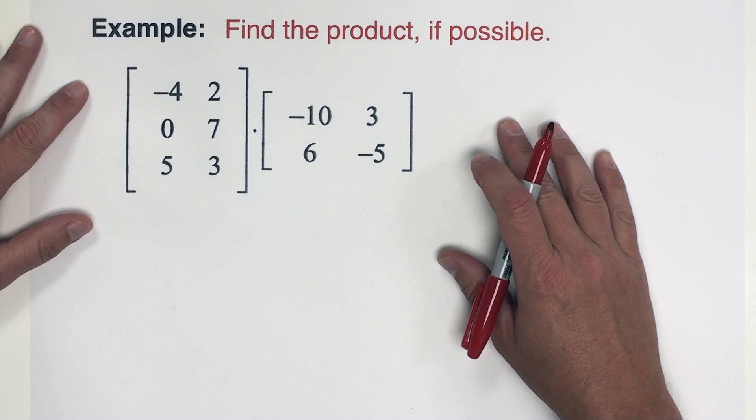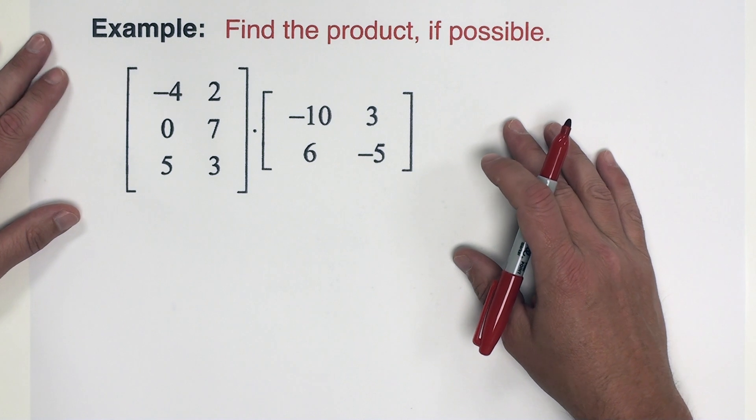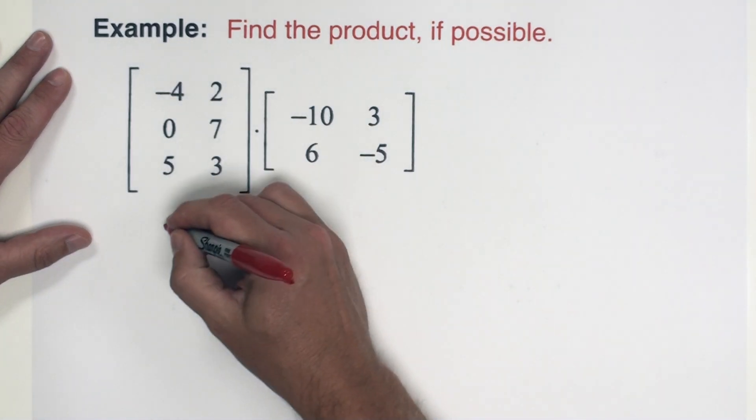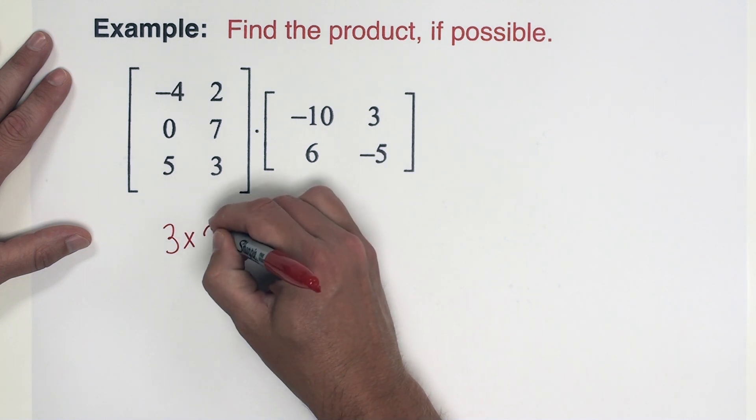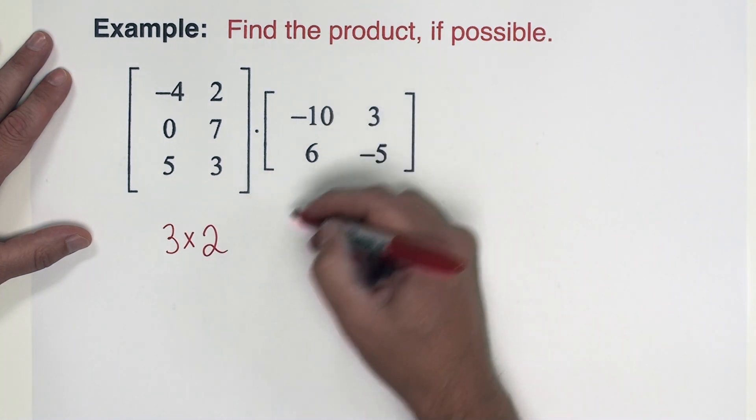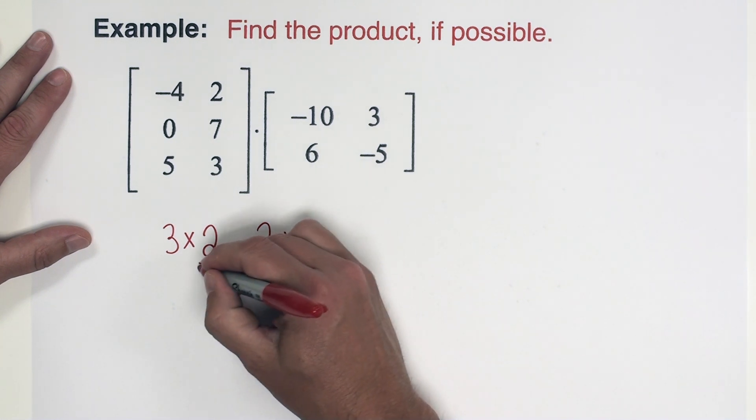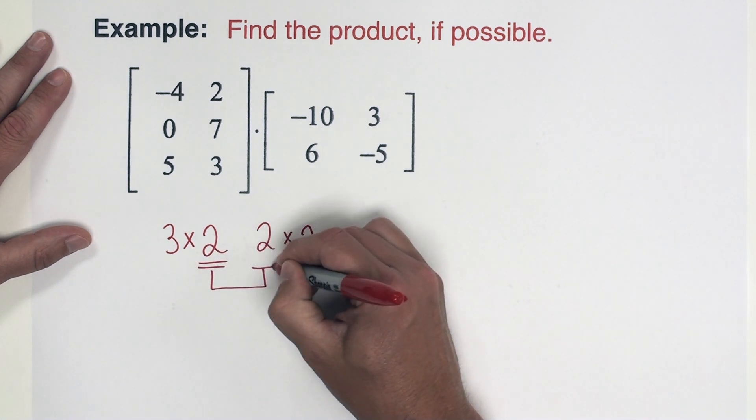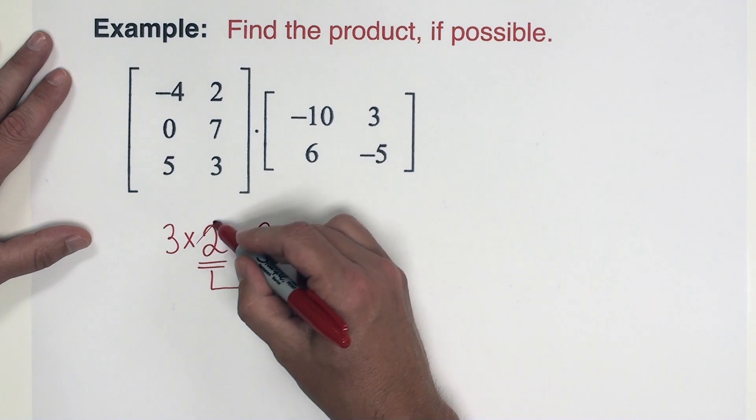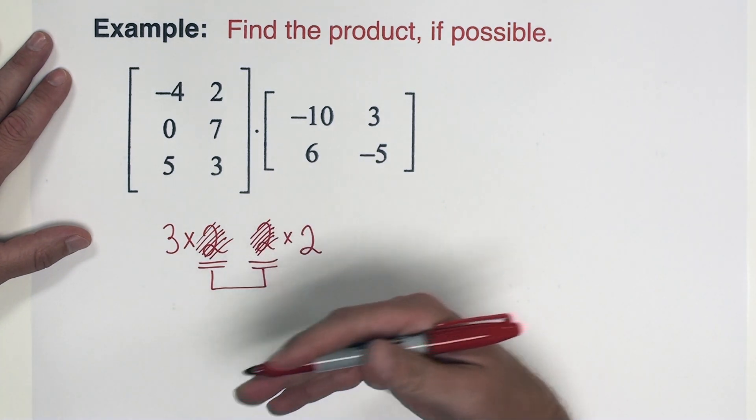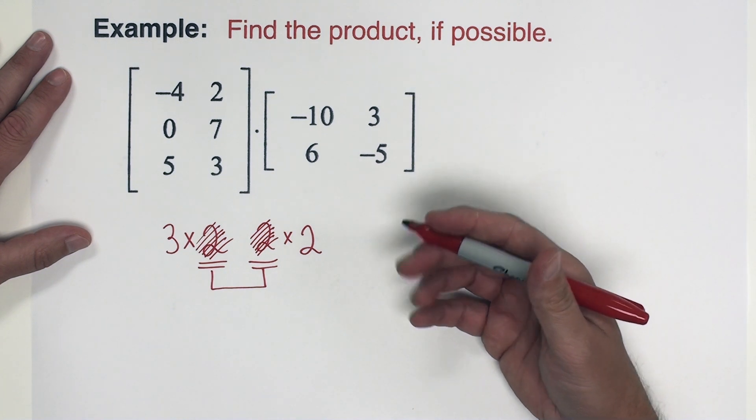First thing we're going to do with the matrix product is we're going to check the size of the matrices. So this first matrix has three rows and two columns. This matrix has two rows and two columns. So I'm checking right here on the inner dimensions. Those numbers are the same, and because they're the same, we can proceed. We can do this product.